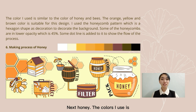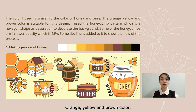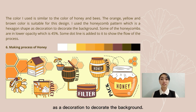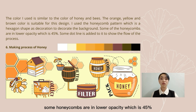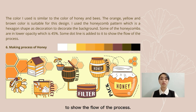Next, honey. The colours I use are similar to the colours of honey and bees — orange, yellow, and brown. I use the honeycomb pattern, which is a hexagon shape, as decoration for the background. Some honeycombs are in lower opacity at 45%. Some dotted lines are added to show the flow of the process.